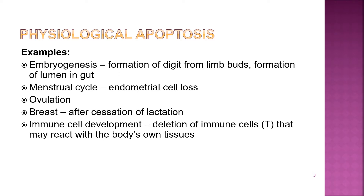Physiological apoptosis is important in embryogenesis when there is formation of digits from the buds. It is also important during the menstrual cycle, where endometrial cells are lost after menstruation, during ovulation, and in breast tissue after cessation of lactation.